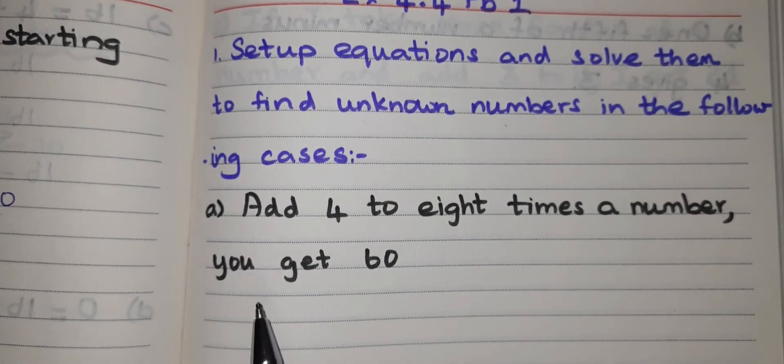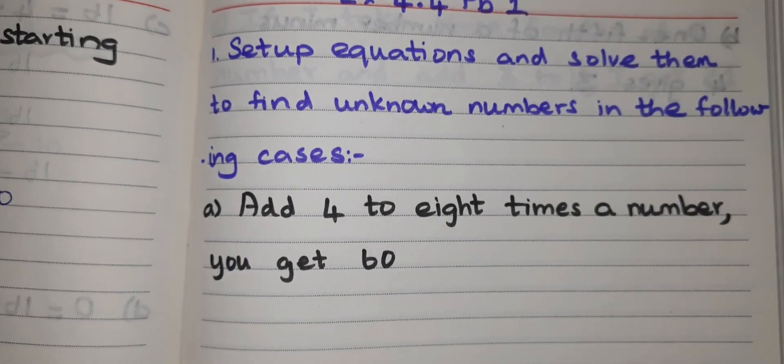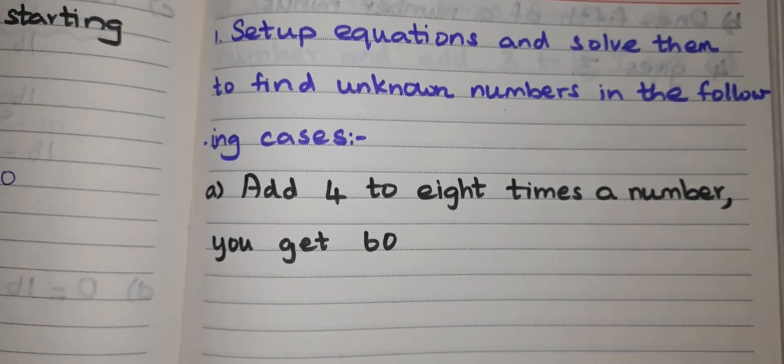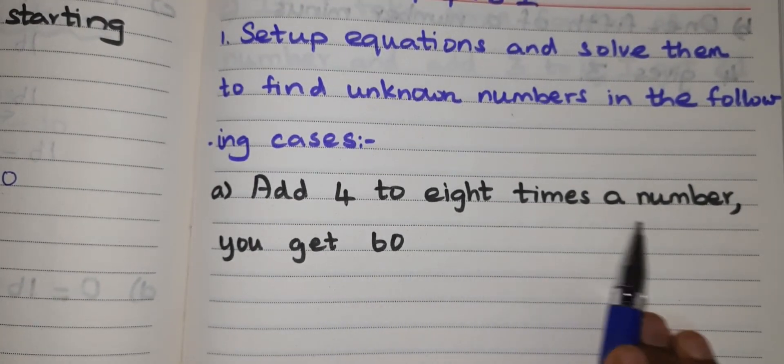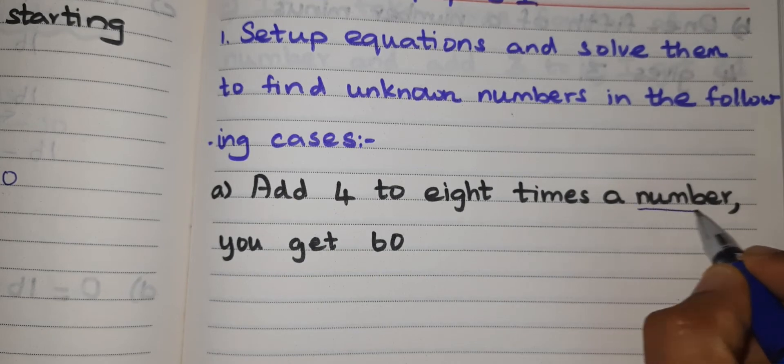So now first I have to form an equation from the given statement. Add 4 to 8 times a number. See they have given a number.